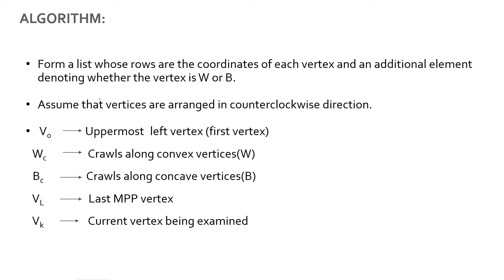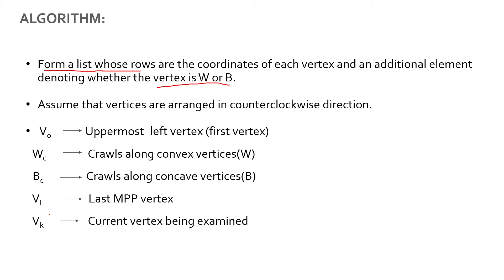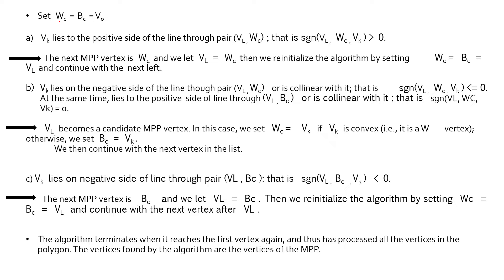Let us see the algorithm. For the computation, we will form a list whose rows are the coordinates of each vertex, with an additional element denoting whether the vertex is white or black. We will also have a few other variables: V0 represents the upper-most left-most vertex; WC and BC are two pointers which crawl across the white vertices and the black vertices respectively; VL will be the last MPP vertex; and VK will be the current vertex being examined. We start by initializing WC equals BC equals V0, and we will have three conditions.